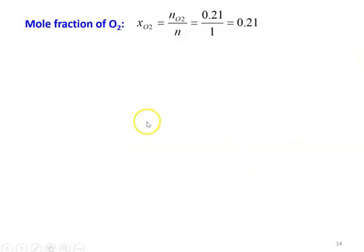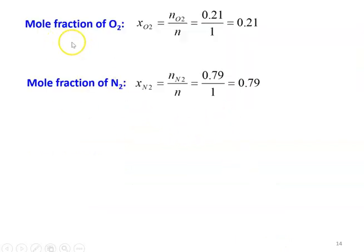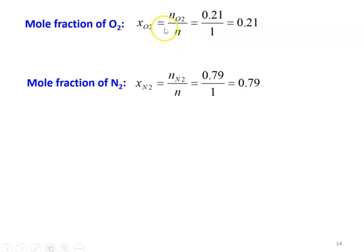Mole fraction of oxygen XO2 equals number of moles of O2 divided by total number of moles. The total number of moles equals 1 because 79 plus 21 equals 100. So XO2 = 0.21 divided by 1 = 0.21. Mole fraction of nitrogen XN2 equals 0.79 divided by 1, which equals 0.79.